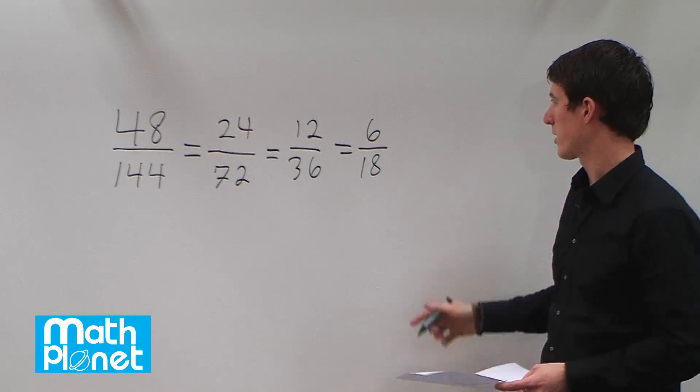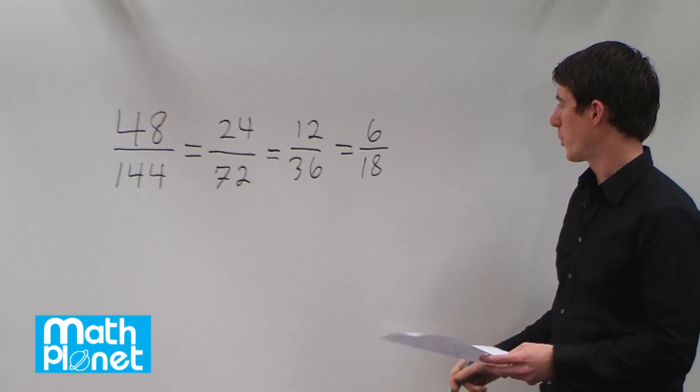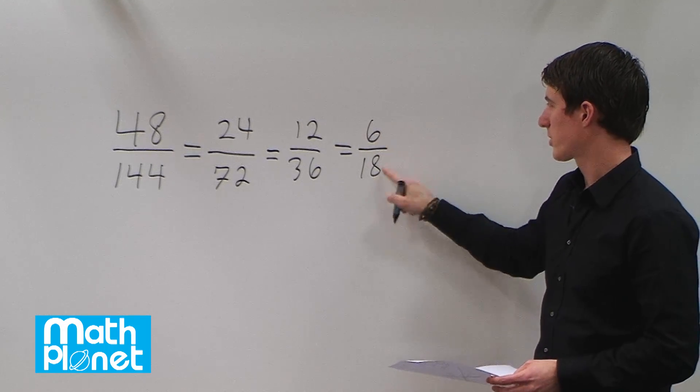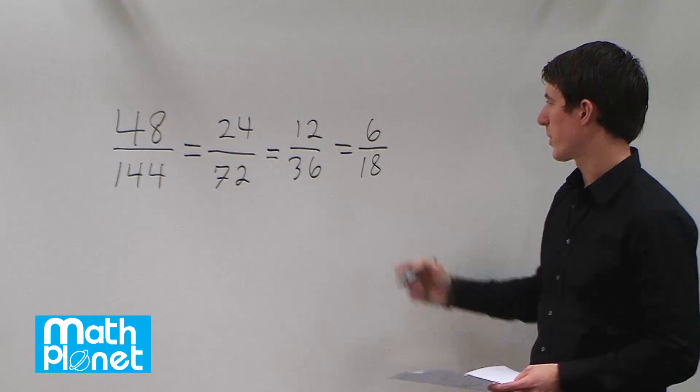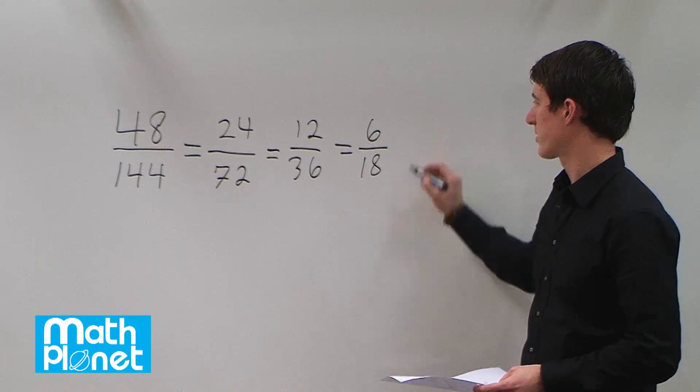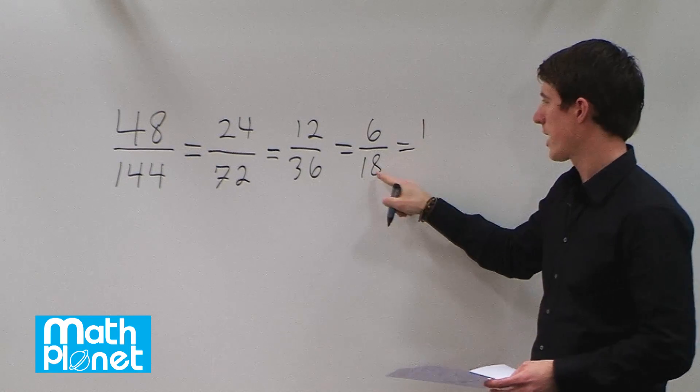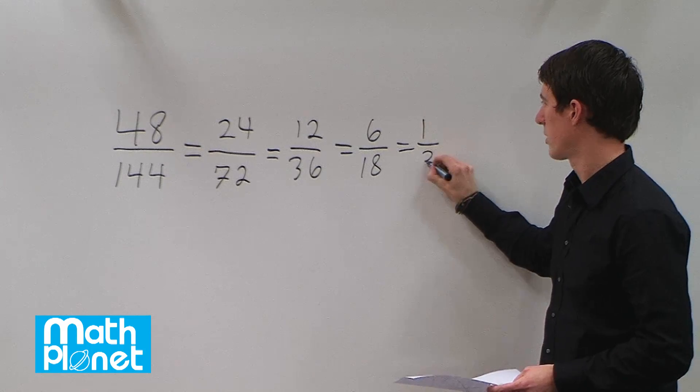So we're getting there. We can keep doing this as far as we want, but at this point, we can already see that 6 goes into 18 a certain number of times, and we can just write it from there. 6 divided by 6 is 1. 18 divided by 6 is 3.